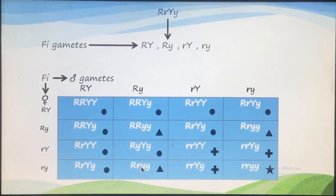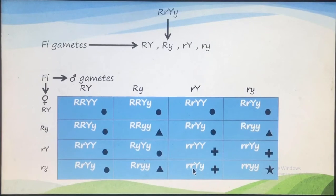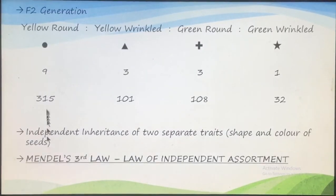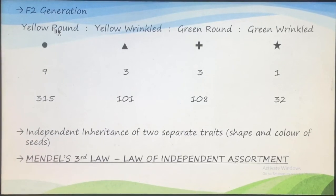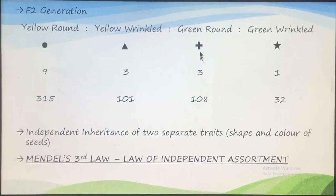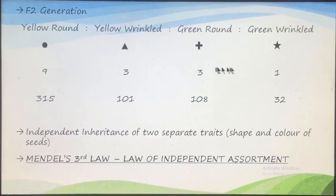Some will be wrinkled and yellow, and some will be wrinkled and green in color. Out of all 16 combinations, 9 organisms will show yellow and round seeds, 3 will show yellow and wrinkled, 3 will show green and round, and 1 will show green and wrinkled. This gives a ratio of 9:3:3:1.